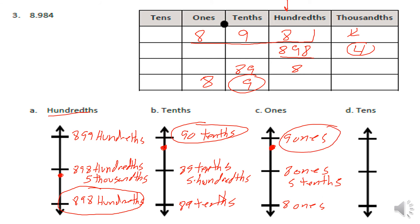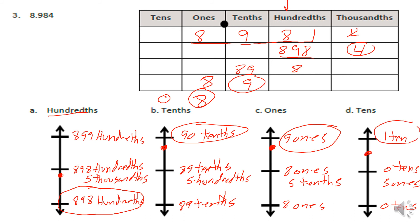For the last part, we're rounding to the tens. We have zero tens and eight ones. The bottom is zero tens, the top is one ten, and the center is zero tens and five ones. Our number has eight ones, which plots right above the center. Since it's five and above, we round to one ten.